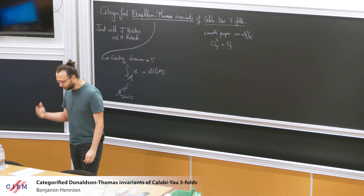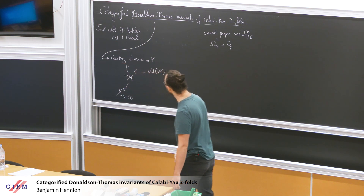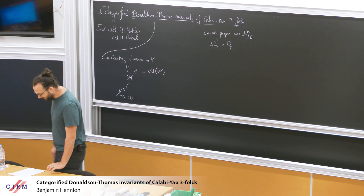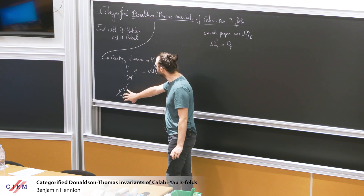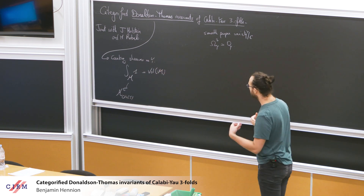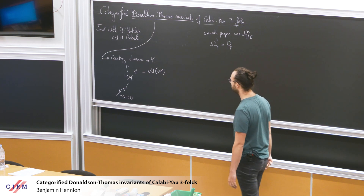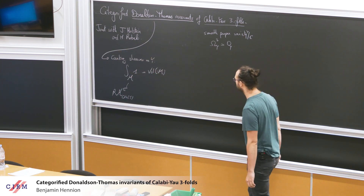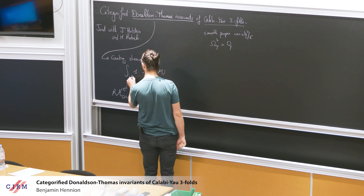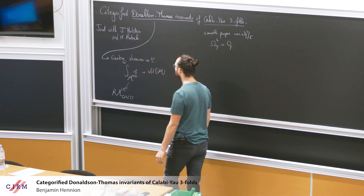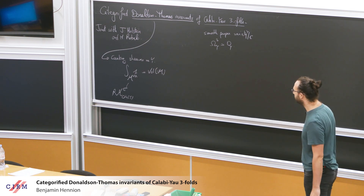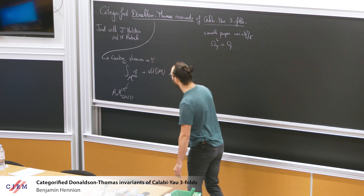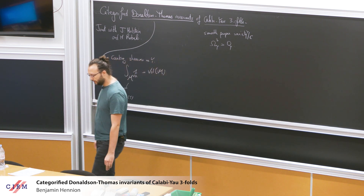The point and the relation with derived geometry, which is an important topic of this conference, is that this doesn't behave well because the moduli space you have here is non-smooth. One way to say that in terms of derived geometry is to say that you have to replace this moduli space by a derived version — as a derived stack. And in terms of invariant, this means that you actually integrate not against the class of M, but you also get what's called the virtual class, which you can get from the derived structure. Historically, it was not defined like that, of course.